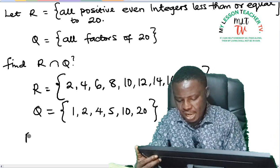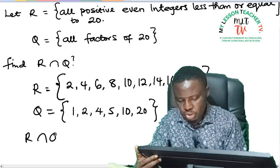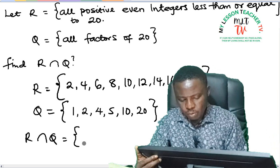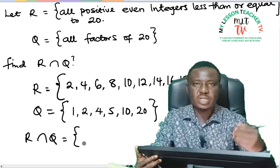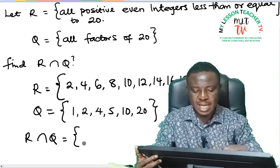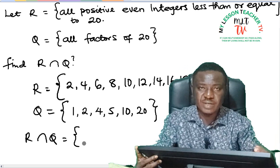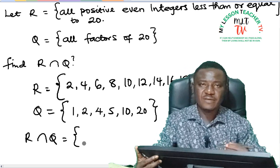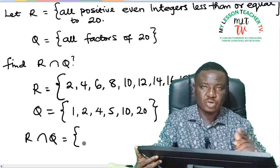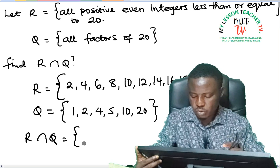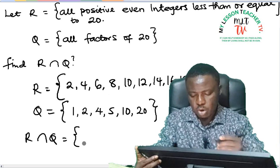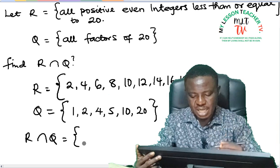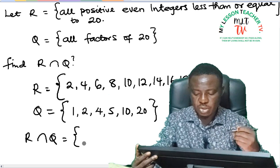Now we are asked to find R intersection Q. Now whenever you have a question like this, always try to understand it by listing out all the elements as given by the definition of this set. Then you can easily find the intersection or the union of these two sets.